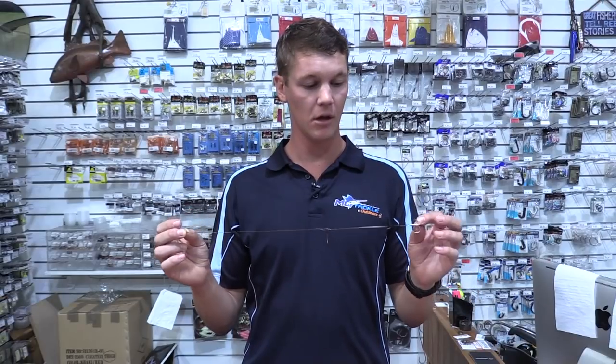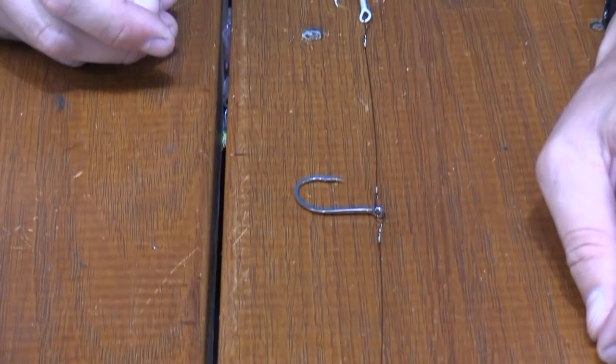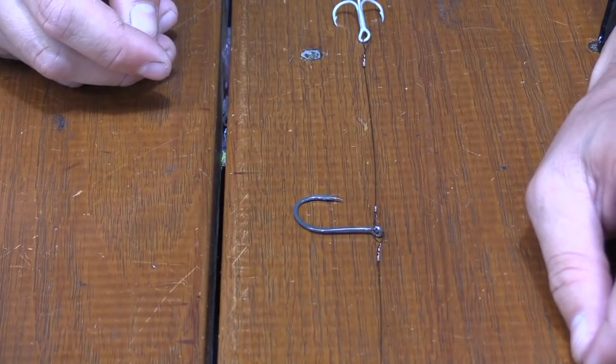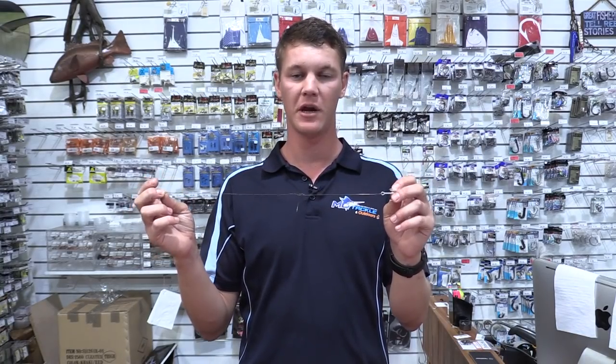So there you go guys, that's your live bait trolling rig for mackerel. Swivel, bit of 58 pound single strand running to an inline hook, haywire twist to another treble at the end used as a stinger. Hopefully with that too you guys can get yourself a nice spot or spanish mackerel.